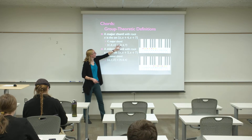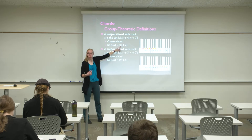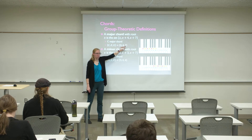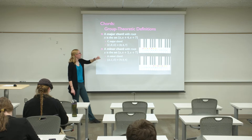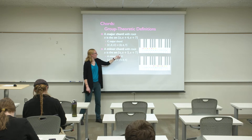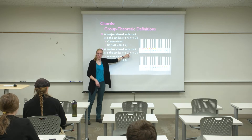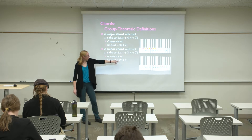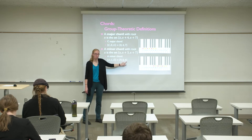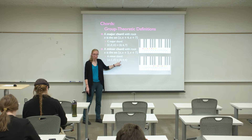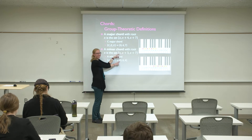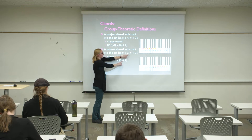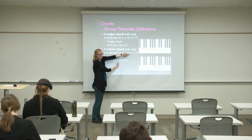For example, the C major chord — shown here in red circles — is C, E, and G, which are group elements 0, 4, and 7. So whatever the tonic is, four more than that, then three more than that. A minor chord with root X is {X, X+3, X+7}. The A minor chord is A, C, E — that's 9, 0, and 4. So X is 9; X plus 3: nine plus three is 12, but that's 0. And nine plus seven is 16, minus 12 is 4.